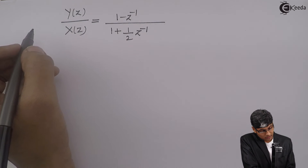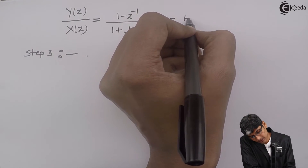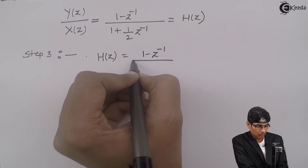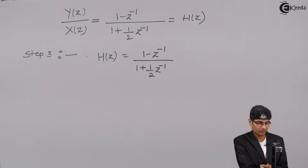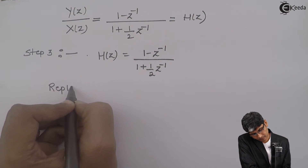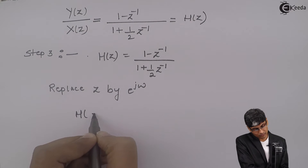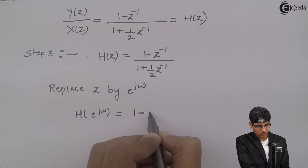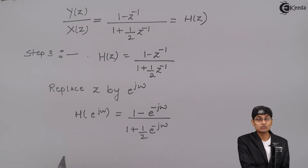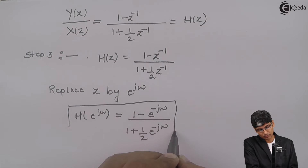Now the problem is to get the frequency response. Step 3: We take H(z) = (1 - z⁻¹) / (1 + 1/2 z⁻¹) and replace z by e^(jω). So we get H(e^(jω)) = (1 - e^(-jω)) / (1 + 1/2 e^(-jω)). This is the required transfer function to proceed for the frequency response.